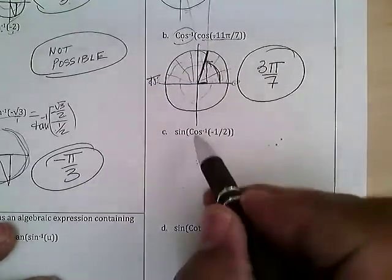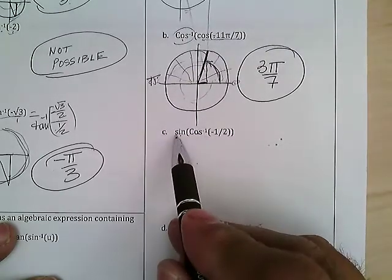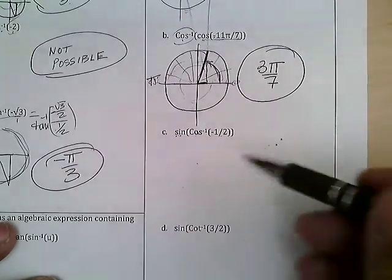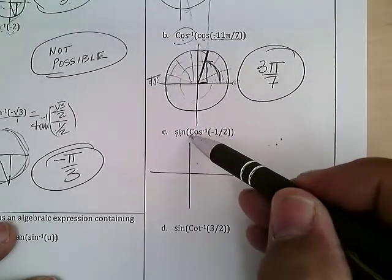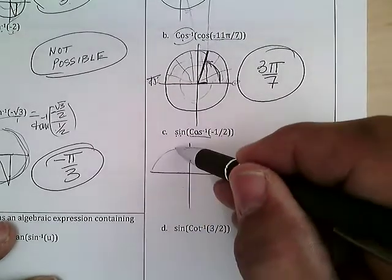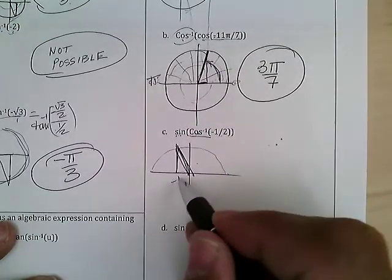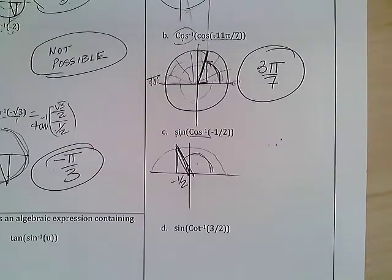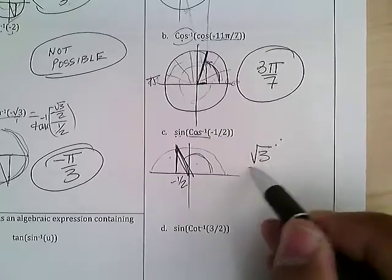The sine of cosine-inverse(-1/2). The inverse is inside, but it's sine on the outside, not cosine — if it were cosine of cosine-inverse it would just be -1/2, but we have to figure out what sine gives. The cosine comes out of two quadrants, and cosine equals -1/2, so the angle is 2π/3. The sine of 2π/3 is positive √3/2.